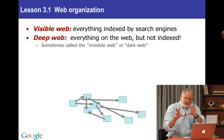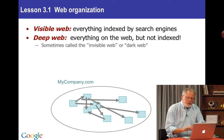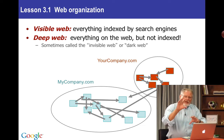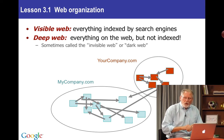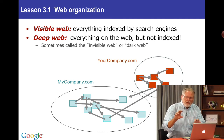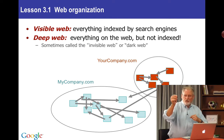The stuff in a particular domain, in a particular web server, is all within one particular space. For example, mycompany.com — that's one domain. There are many, many different domains: newyorktimes.com, google.com, stanford.edu. Those are all different domains, represented here by circles or ellipses, and they have pages within them and links that go between the sites. A page from mycompany.com can link to something in yourcompany.com.